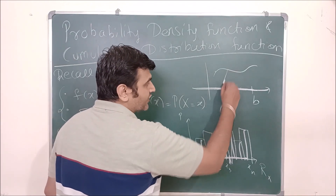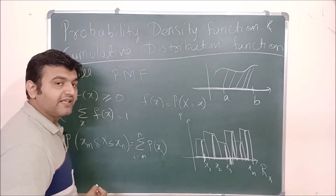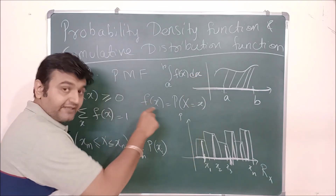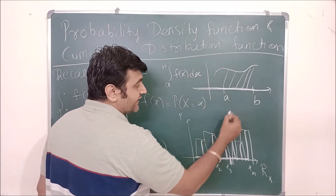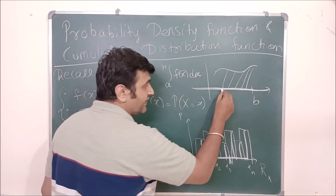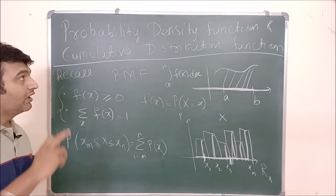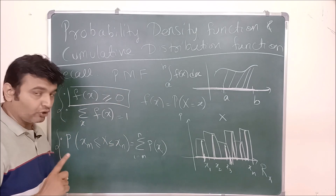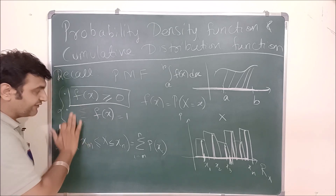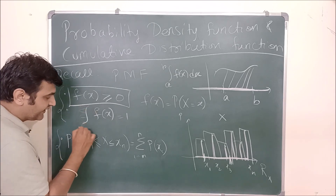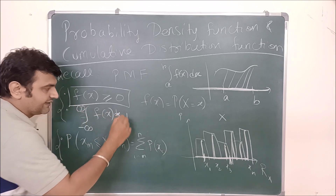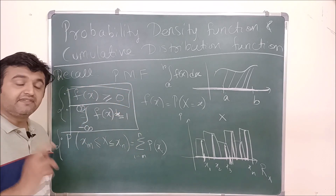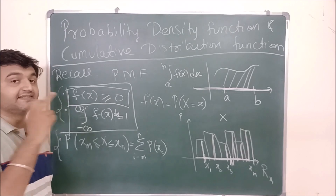So here you also want to find the area under the curve, so integration has to come into the picture. The integral from A to B of F(x) dx is nothing but the probability that the random variable X takes a value between A and B. Now how does the definition go for the probability density function? The first condition is the same: the function has to be non-negative. The second condition is that the integration from minus infinity to infinity of F(x) dx should equal one. If a function satisfies these two conditions, we call it a PDF — probability density function.